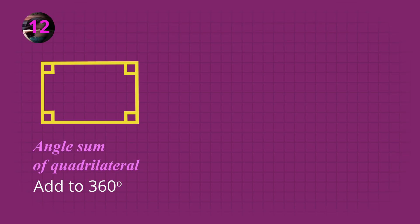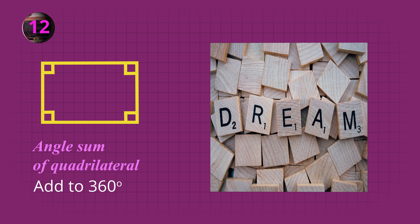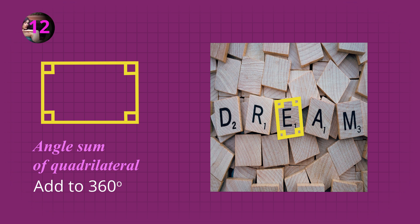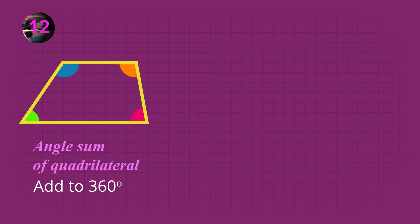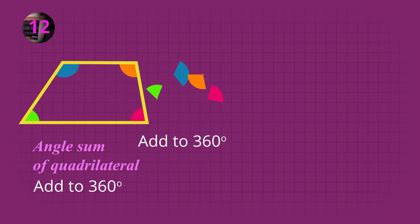Let's see this rectangle. All four angles are right angles — that's 90 degrees each, so 4 multiplied by 90 is 360 degrees. All four angles of any quadrilateral, any four-sided shape, add to 360 degrees.